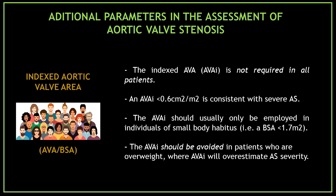We already talked about essential parameters, but we can also use additional parameters in the assessment of aortic valve stenosis. The first additional parameter is the indexed aortic valve area. It is not required in all patients, and an indexed aortic valve area less than 0.6 cm² per m² is consistent with severe aortic stenosis. Its use should usually only be employed in individuals of small body habitus, and should be avoided in overweight patients, where it will overestimate aortic stenosis severity.